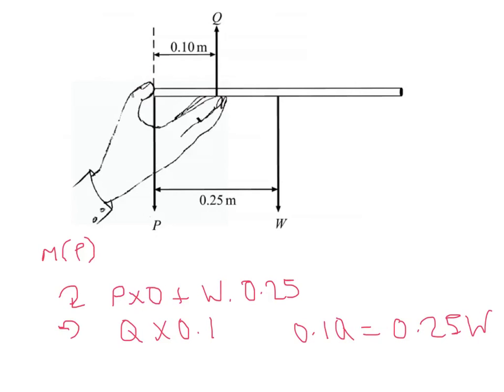And in the question, in the little bit before, I think they worked out what the weight was, or they told you what the weight was, so then it's simply a case of slight rearrangement to solve for what Q is.